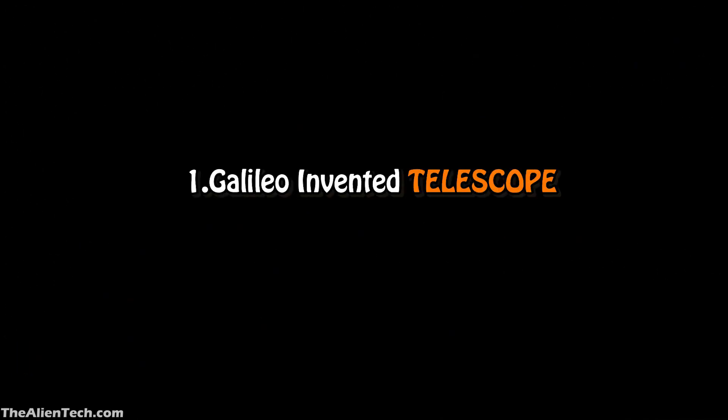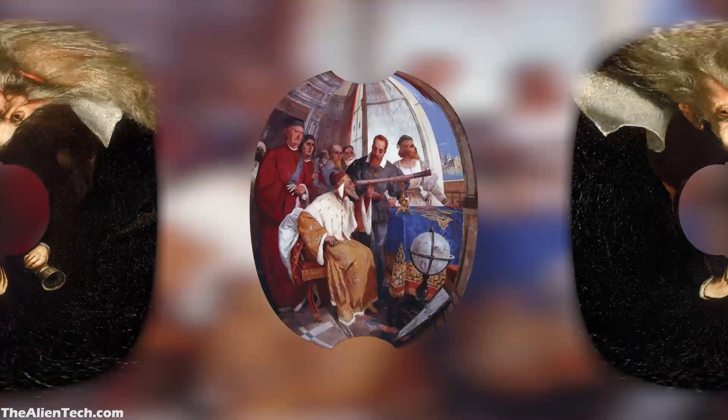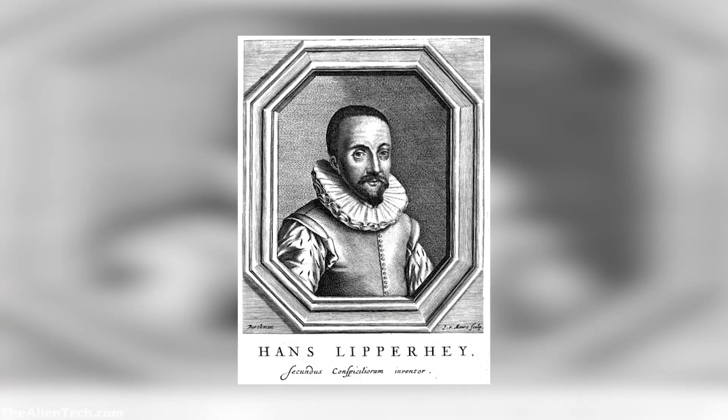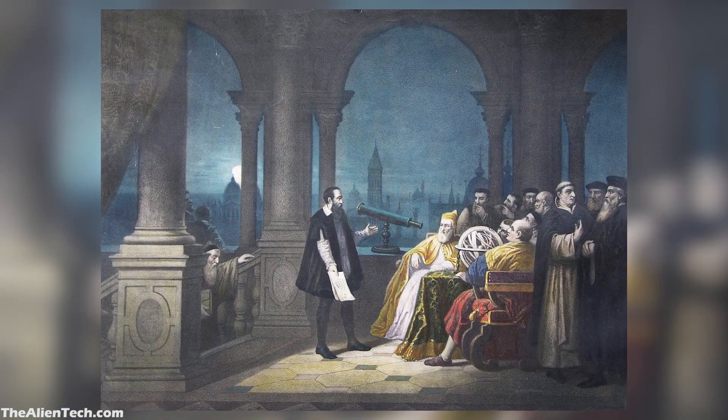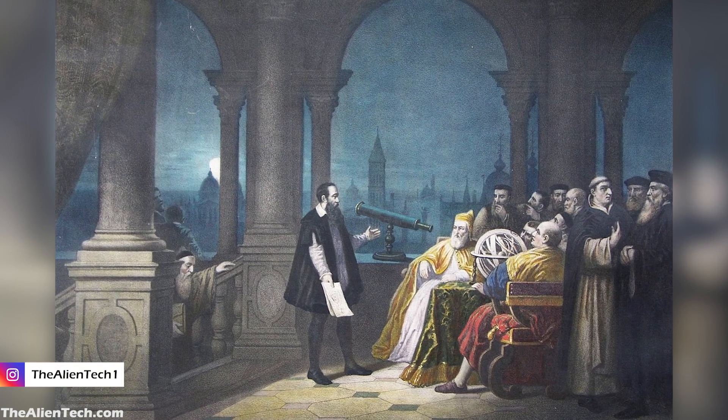Today we will see the most common myths which people believe about astronomy and especially about telescopes. The first myth is Galileo invented the telescope. Most people think that Galileo was the first to invent the telescope, and that's completely false. The telescope was invented in the Netherlands in 1608 by lens maker Hans Lippershey. They made an instrument that they were hoping to sell to the government for military use.